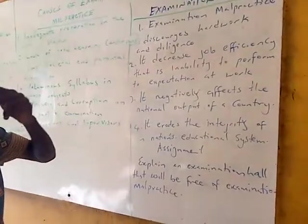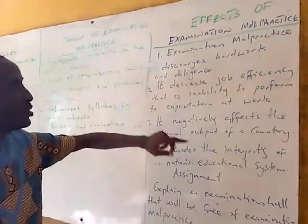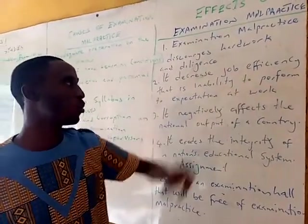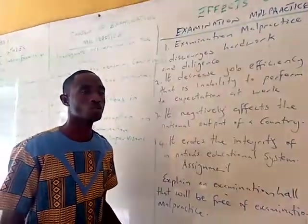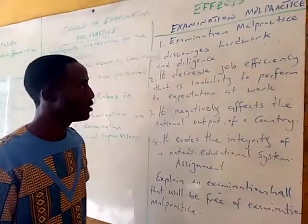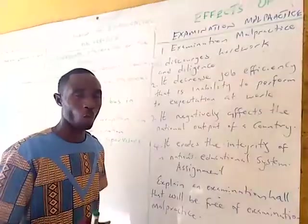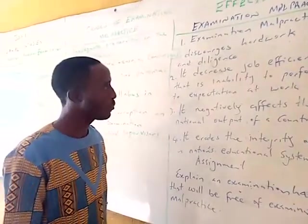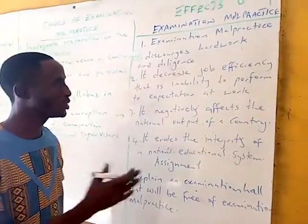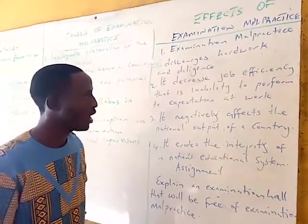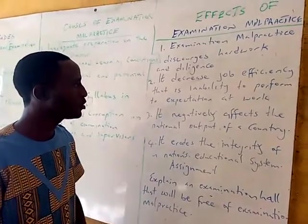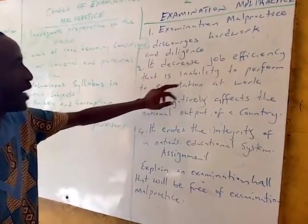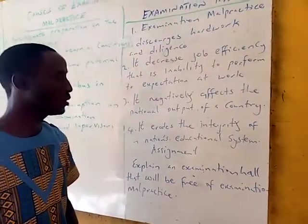Number two: examination malpractice decreases job efficiency — that is, the inability to perform to expectations at work. The purpose of examinations is to measure ability. When an examiner certifies that you have passed with a good grade, employers of labour will expect you to perform at that level. When you are given the job and you do not live up to expectations, it decreases job efficiency.